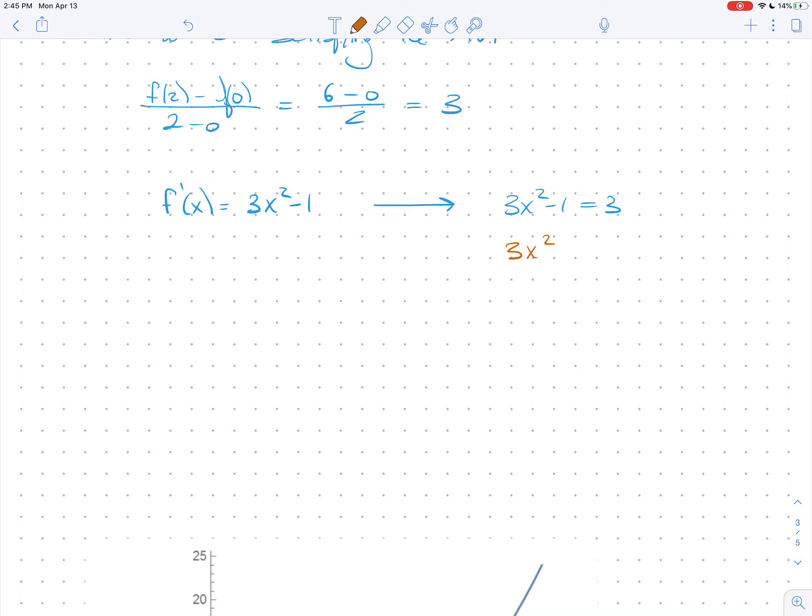So I get 3x² equals 4. So x² equals 4/3. So x is plus or minus 2 over root 3.